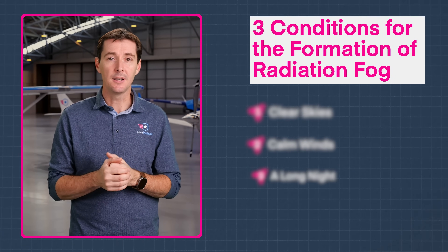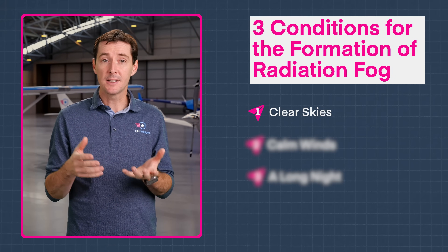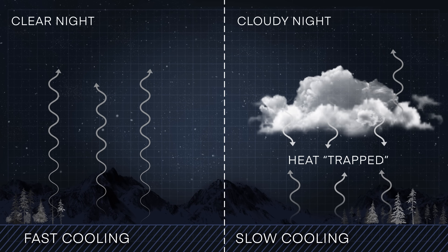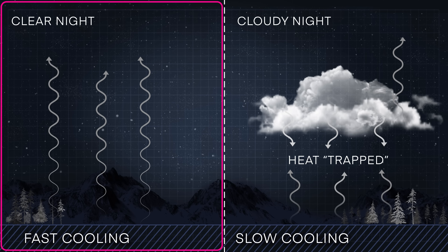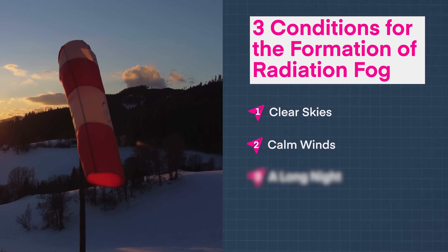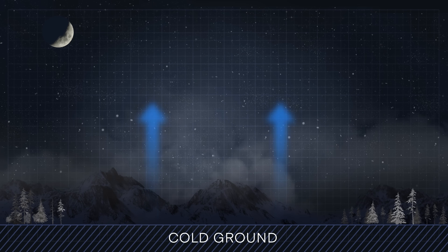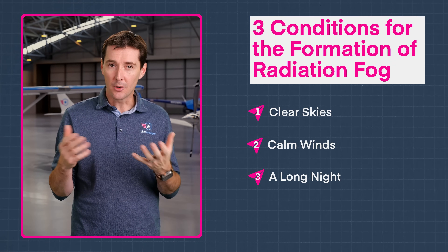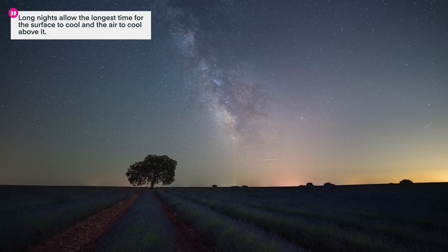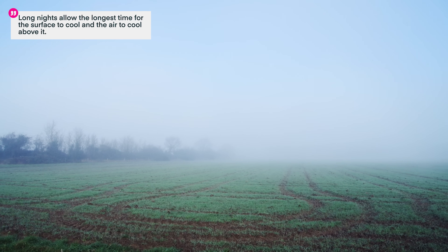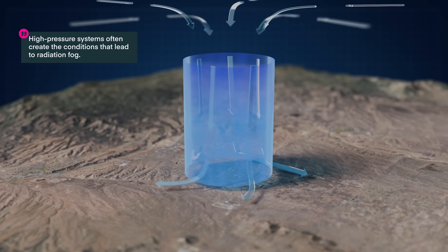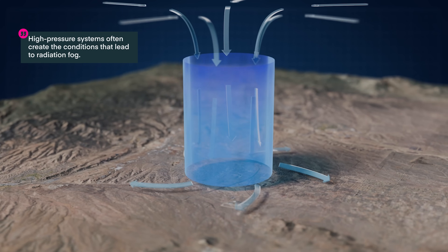There are three different conditions that lead to the formation of radiation fog. The first is a clear sky — clouds will trap heat from the surface, causing the air above it to stay warmer, so a clear sky causes the maximum cooling effect. Second, we need calm winds, which allows for uninterrupted cooling of the air. Third, we need a long night — just like those in winter — allowing the surface and air above it to cool for the longest period of time. High-pressure systems often create the conditions that lead to radiation fog.